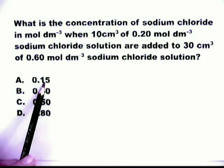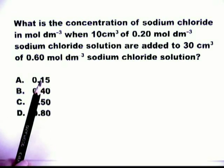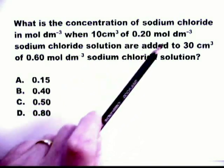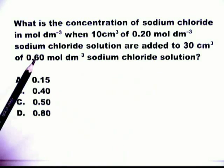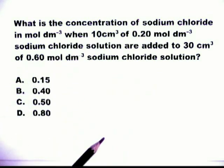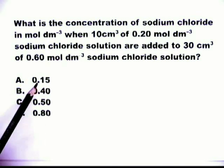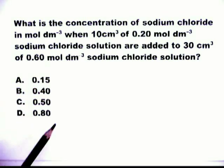Look at the first answer, A, 0.15. This is more dilute than the most dilute of the two solutions, 0.2 mol per decimetre cubed. It is impossible to get a final solution that is more dilute than either of the two solutions used.